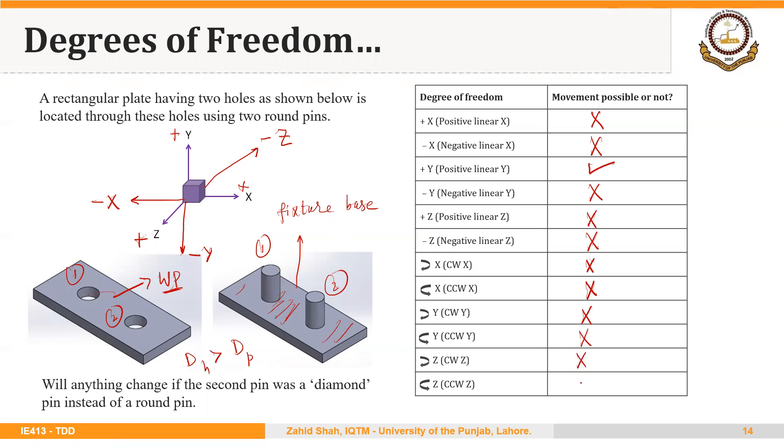The same is true about the z-axis. So only one degree of freedom, that is linear movement in the y-axis, upward movement, is not restricted. The remaining 11 degrees of freedom are restricted by locating the workpiece through two holes.